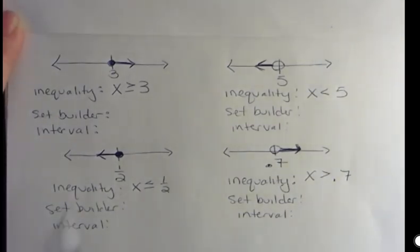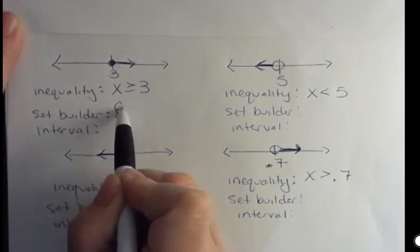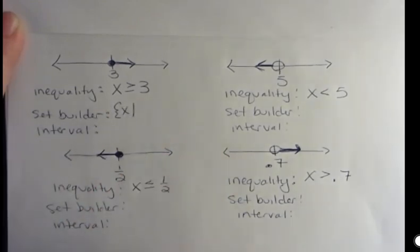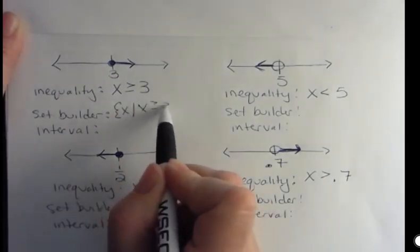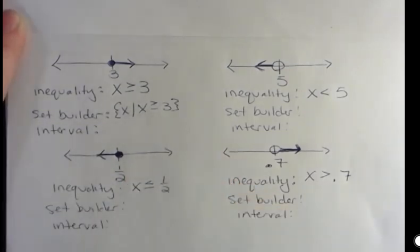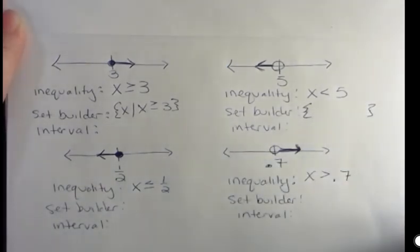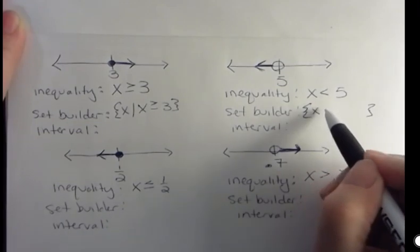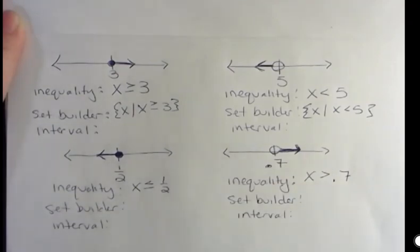Set builder notation is just a way to write this in a more formal manner. So we would take this and say the set of all x — that slash means 'such that' — x is greater than or equal to 3. That's called set builder notation. It's got those set symbols on either end. And then we say the set of all x such that x is less than 5. I want you to recognize that this same thing is in my set builder notation that I wrote as an inequality.